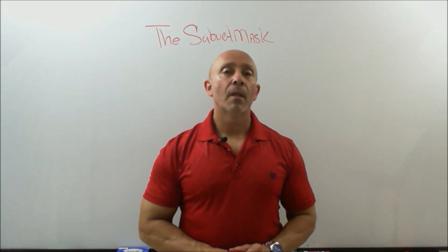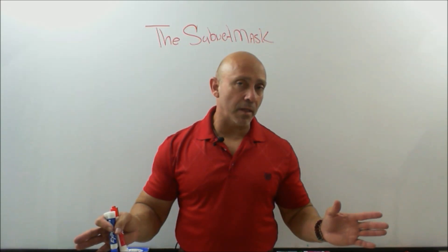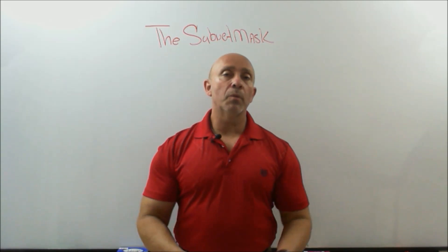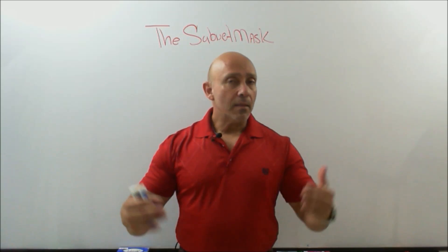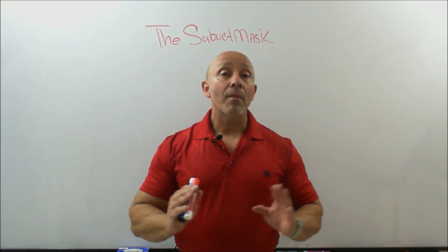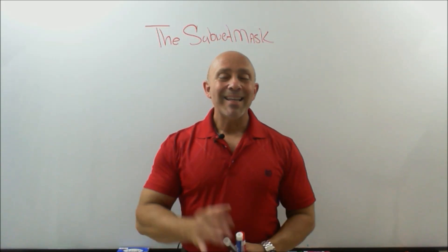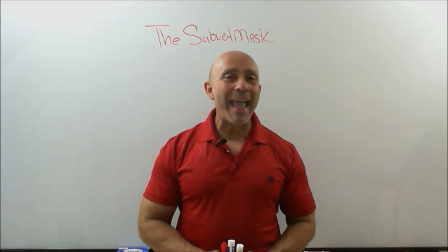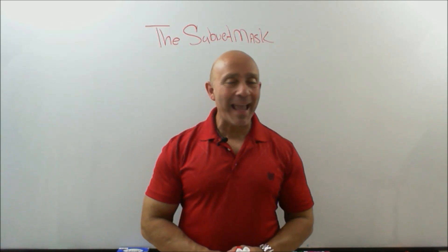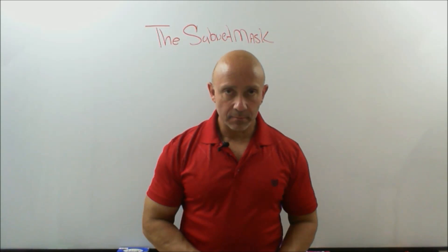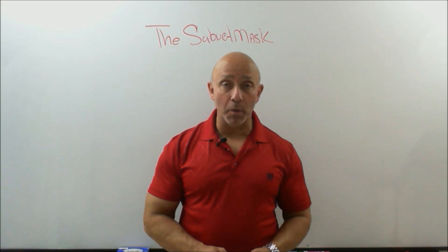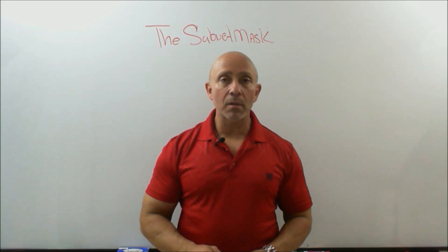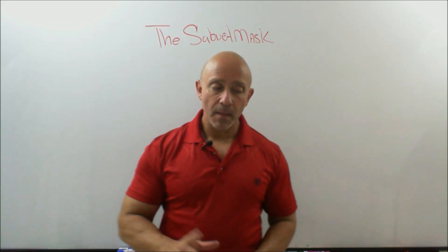Hello everyone and welcome back. In previous lectures we talked about the classes of IP addresses, the ranges, default masks, default hosts, and we even went into the private IP addressing range. This lecture is going to talk about the subnet mask only. The subnet mask is the key to everything — to answering any question whatsoever that anyone can ask you for subnetting. The subnet mask is the most important part of an IP address because it determines what part is your network and what part is your host.